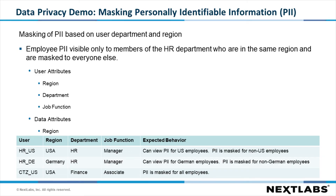In this example, we will see how DAE can be used to mask personally identifiable information, or PII, based on the region, department, and job function of the user doing the data access request. The policies that we define will specifically allow employee PII to be visible only to managers in the HR department who are in the same region as the employee. For all other users, this information will be masked.